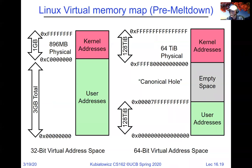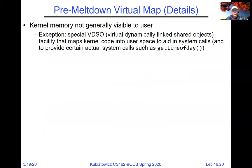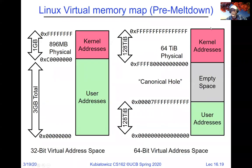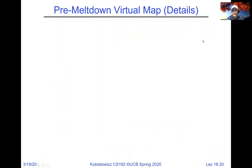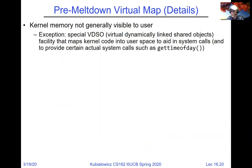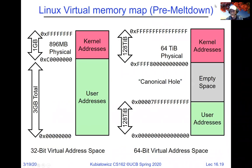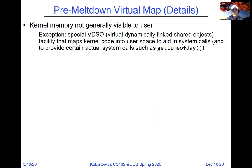Continuing: pre-meltdown, the kernel memory was mapped into the upper portion of every process's address space but marked kernel-use-only in the page table entries. There were some special dynamically linked shared objects (VDSO) placed in user-accessible space so users could do things like get-time-of-day quickly without trapping into the kernel. Meltdown revealed that having kernel addresses mapped in user page tables was a security problem, requiring changes to this layout.